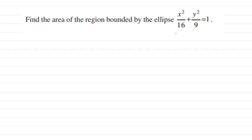This is another question: find the area of the region bounded by the ellipse. First, you know that an ellipse can be like this or it can be like this. It depends on the major and minor axis.